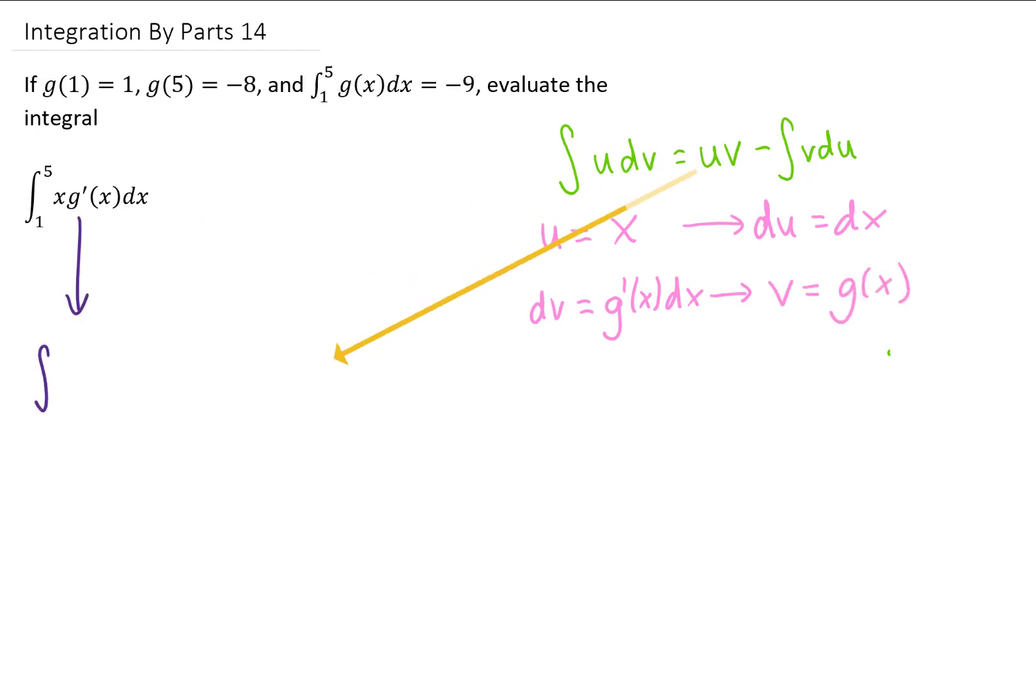Now we can use the integration by parts formula to rewrite this integral here. We will write down u times v, which is x times g of x, minus the integral of v du, which is g of x times dx. And now since this is a definite integral that we started with, we need to keep our limits of integration. So we'll put those right here, and right here.